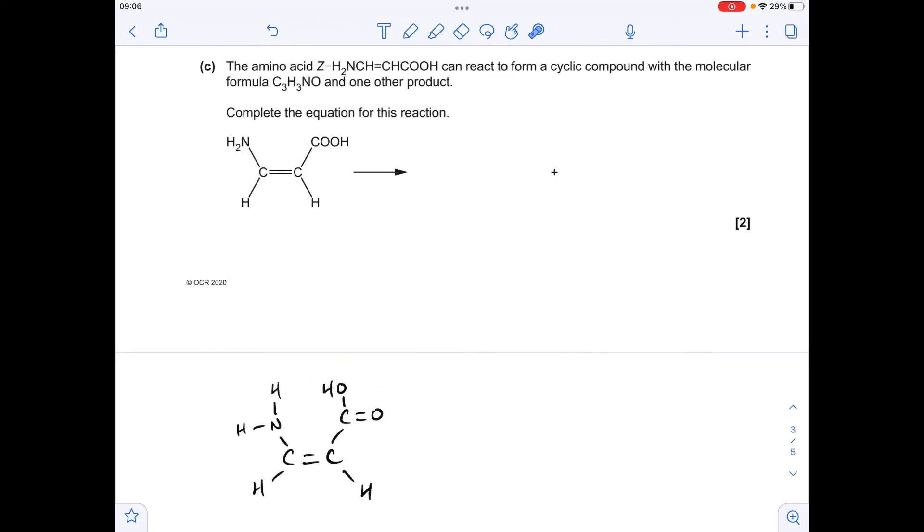Moving on to part C, I've drawn up a displayed formula for the amino acid. The hydrogen on the amino group is going to combine with the hydroxyl group of the carboxylic acid group and generate a water molecule, which leads to a bond forming between the nitrogen and the carbon of this C=O bond. We're forming an amide group here, and you can see it's cyclic. There's the equation.